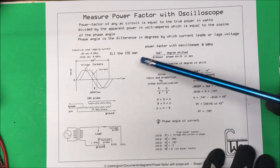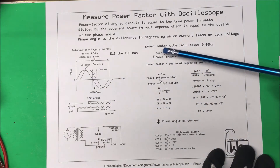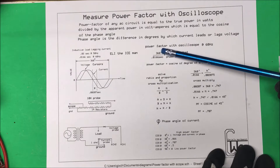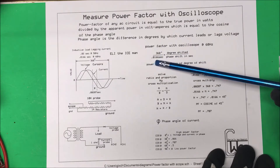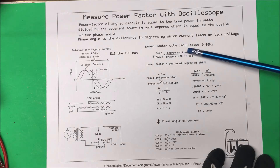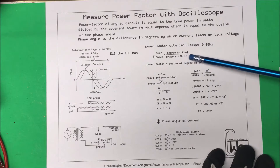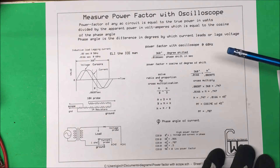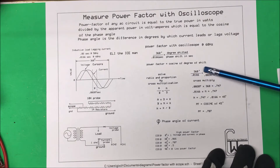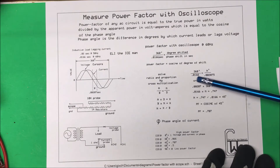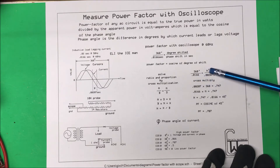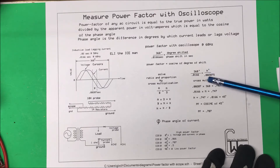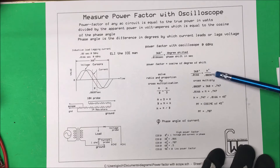To do that we use ratio and proportion: 360 degrees over the period of 0.0166 seconds equals the unknown degrees shifted over the measured phase shift in seconds, which is 0.002075 seconds. So the formula is 360 over 0.01666 equals degrees shifted over 0.002075.